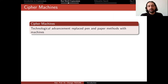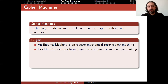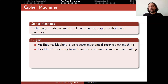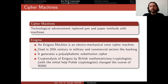After the First World War, technological advancements meant cipher machines started to replace pen-and-paper methods. A famous example is the Enigma machine — most probably seen in many movies. An Enigma machine is an electromechanical rotor cipher machine used in the 20th century in military and commercial sectors like banking. It generates a polyalphabetic substitution cipher, meaning more than one letter is substituted. The cryptanalysis of Enigma by British mathematicians and cryptologists at Bletchley Park, with the initial help of Polish cryptologists, changed the course of the Second World War.